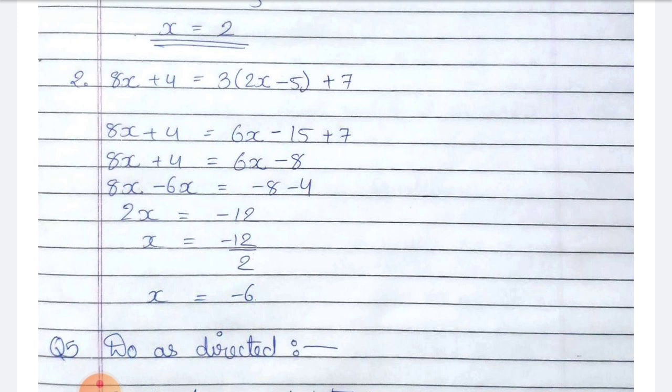8x minus 6x plus 4 is — combining, we get 2x is equal to minus 12. Taking 2 to the other side: x is equal to minus 12 by 2, which equals minus 6. So the value of x is minus 6.